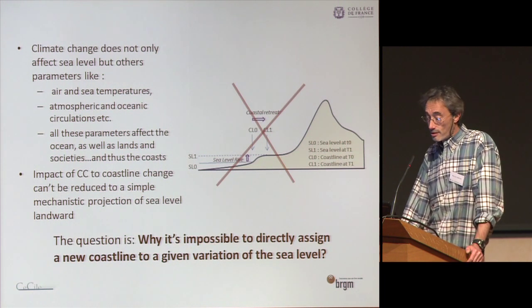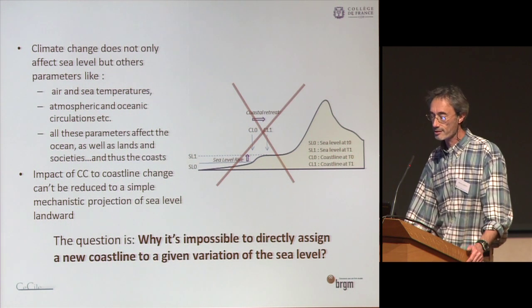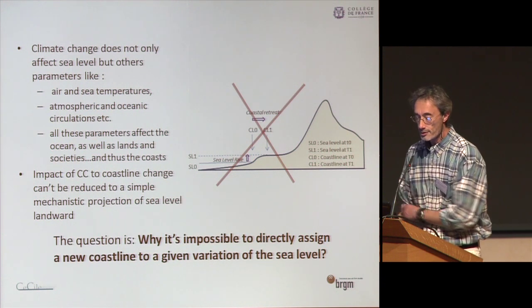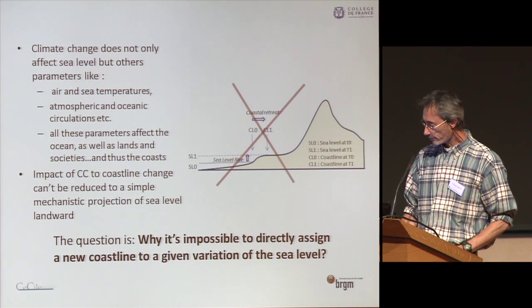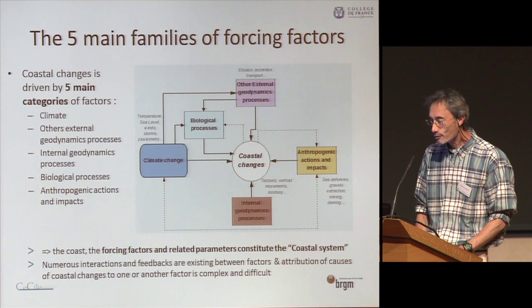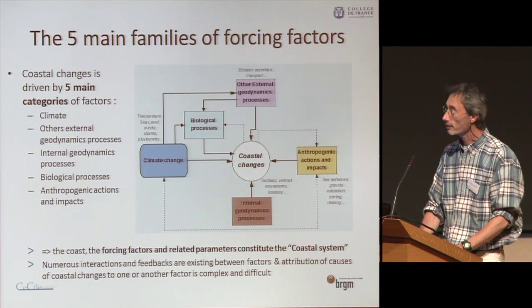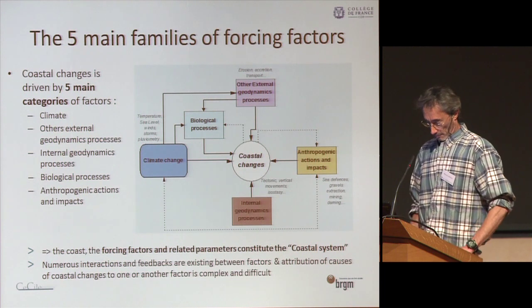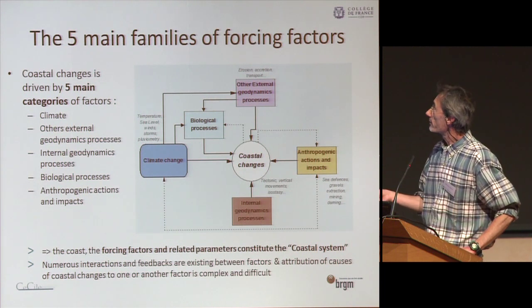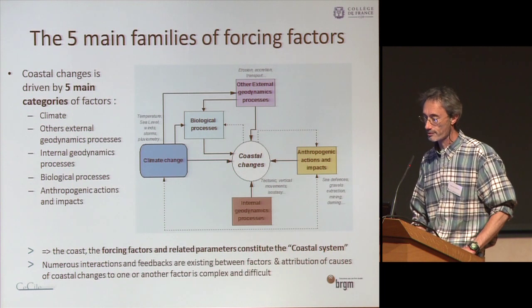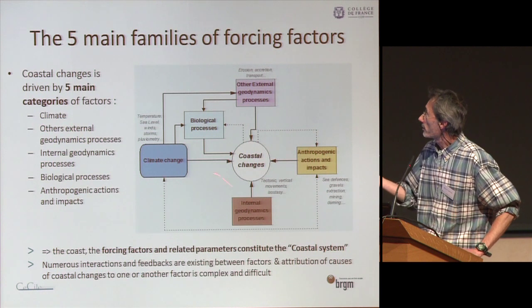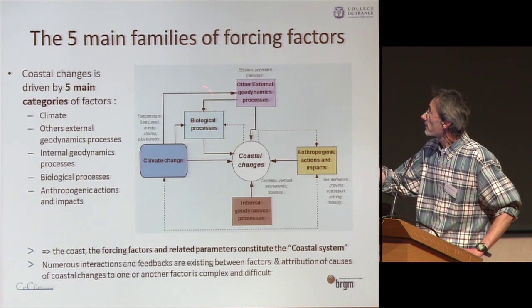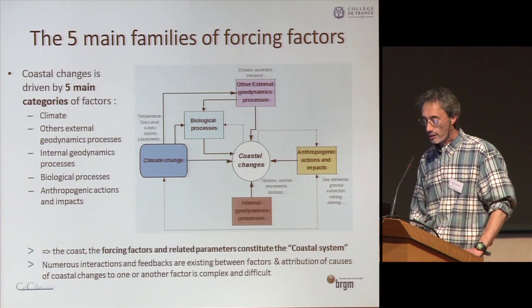The impact of climate change on coastal change cannot be reduced to a simple mechanistic projection of sea level. It is impossible to directly assign a new coastline to a given variation of sea level — it's not so simple, because we have five main families of forcing factors: climate, external geodynamic processes, internal geodynamic processes, biological processes, and anthropogenic actions and impacts.